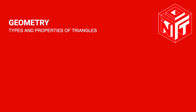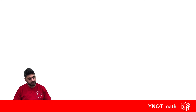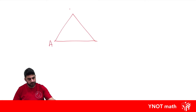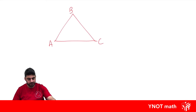Types and properties of triangles. A triangle is just a three-sided polygon. In maths, we like to label polygons with letters on the vertices.